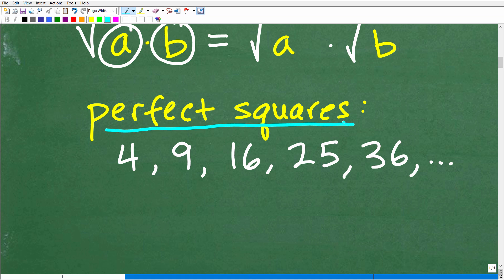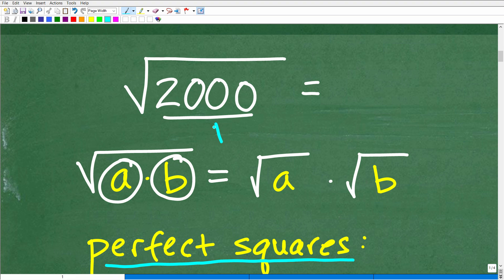So these are some perfect square factors, 4, 9, 16, 25, 36. So these are the type of factors that we want to be thinking about when it comes to this particular value.